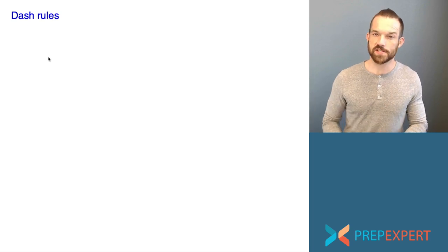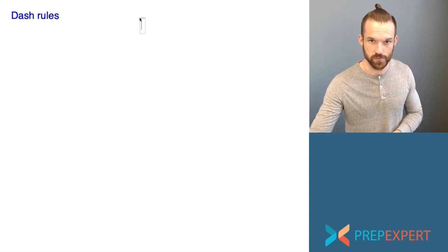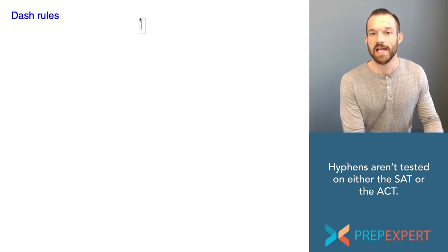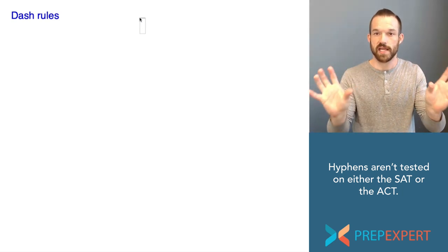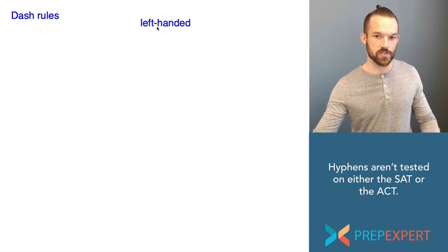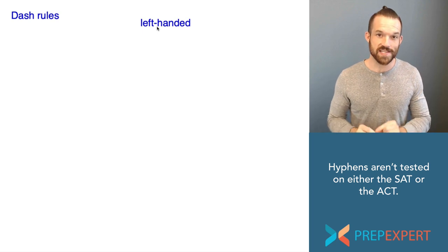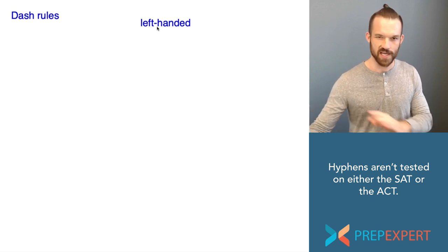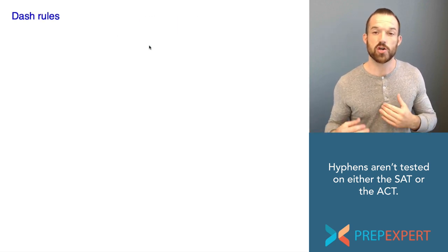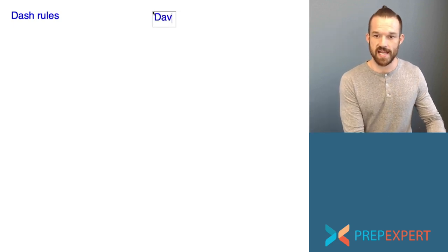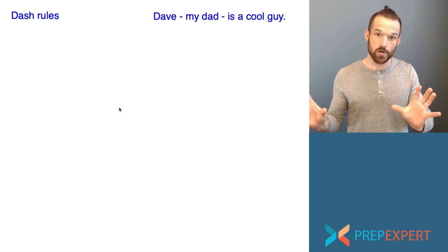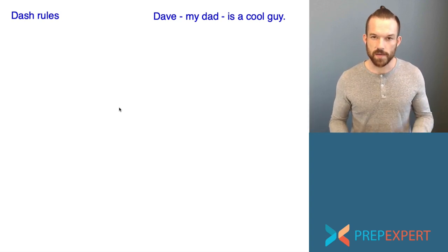There are two ways in which you can use a dash. But first, let me distinguish between a dash and a hyphen. Dashes and hyphens are often confused. On most computers, you create them the same way. A hyphen is the mark you make to join two words into one word — for instance, 'left-handed.' The hyphen is not tested on either the SAT or the ACT. The dash, by contrast, is tested. A dash is a punctuation mark used within a sentence — for instance, 'Dave — my dad — is a cool guy.' It separates words from each other, not joins words into one. This is the mark that does get tested.